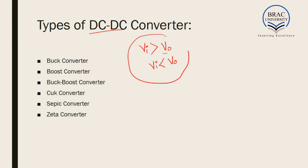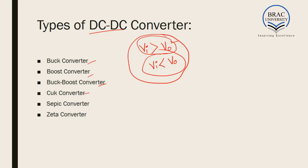There are certain circuits which can do both — in certain conditions they can make the output smaller, and in other conditions they can make the output larger. We will be studying six types of DC-DC converters: buck, boost, Cuk, SEPIC, and Zeta, in gradual succession.